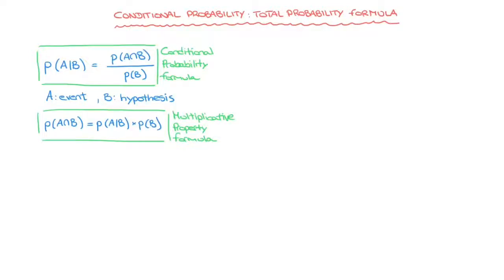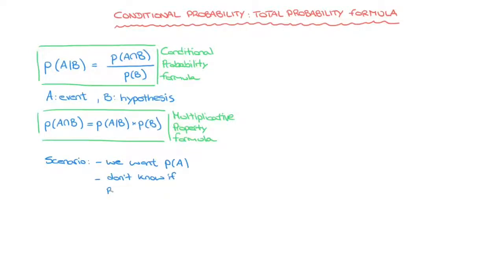Now what we learn about here is the total probability formula. The idea is: let's say we want to calculate the probability of event A occurring, but we have absolutely no idea whether or not the hypothesis B has occurred. In other words, we want the probability of event A and we don't know whether or not event B has occurred. Since we can't simply use the conditional probability formula, we use the total probability formula instead.